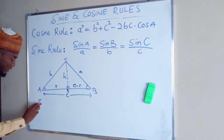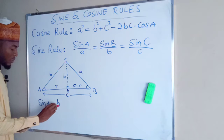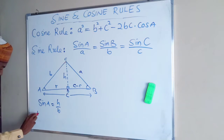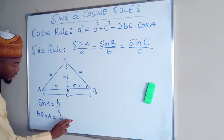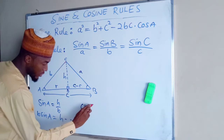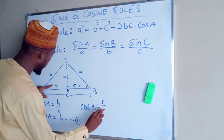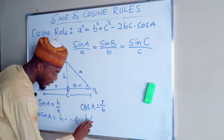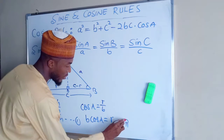Let us obtain the sine of angle A. Sine A equals opposite divided by hypotenuse; the opposite is H and the hypotenuse is b. Multiplying both sides by b gives us H = b·sinA — call this equation one. Now for cosine of angle A: cosA equals adjacent divided by hypotenuse; the adjacent is R and the hypotenuse is b. Multiplying both sides by b gives R = b·cosA — call this equation two.